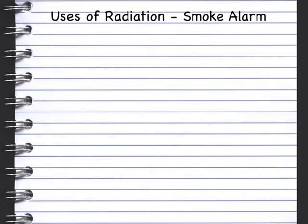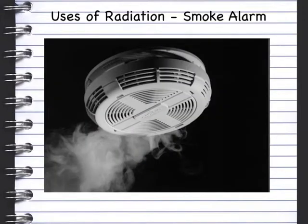In this video on uses of radiation, we're going to be looking at smoke alarms. Smoke alarms contain an alpha source of radiation, and they sound an alarm when that radiation is disrupted.